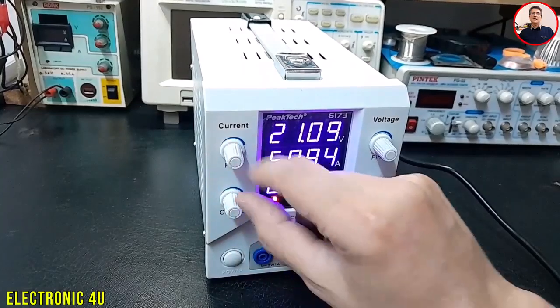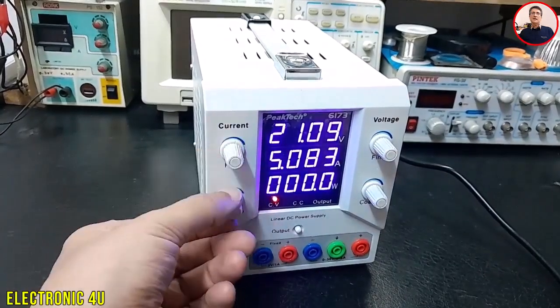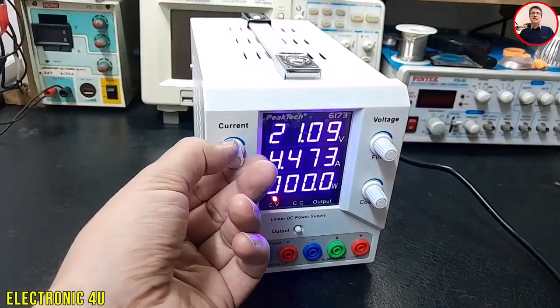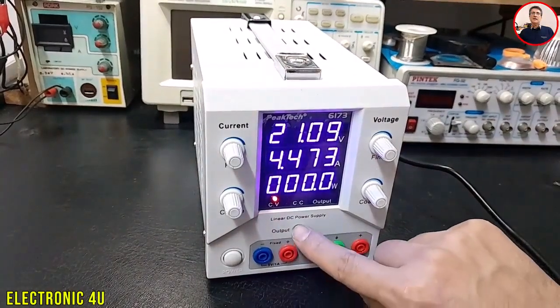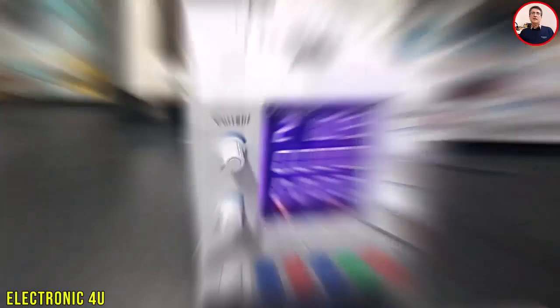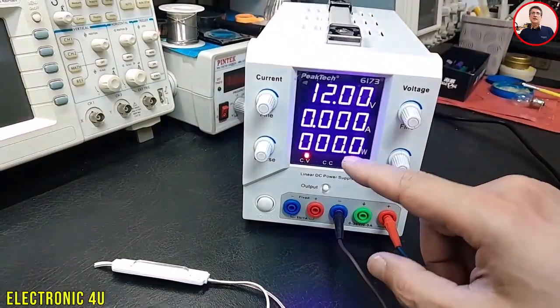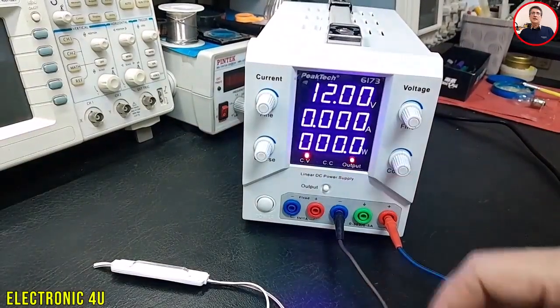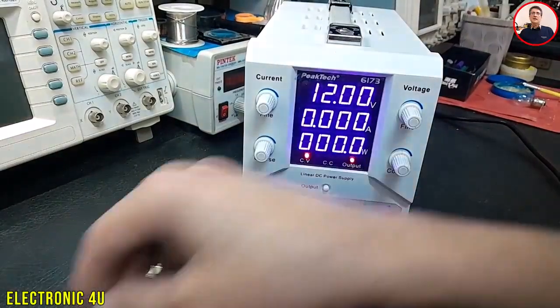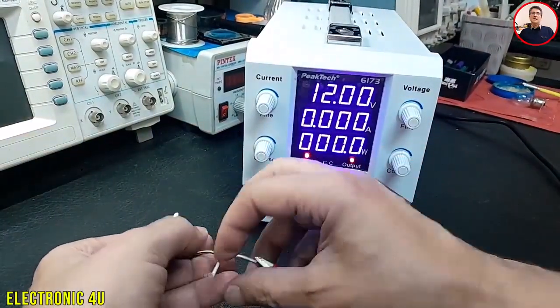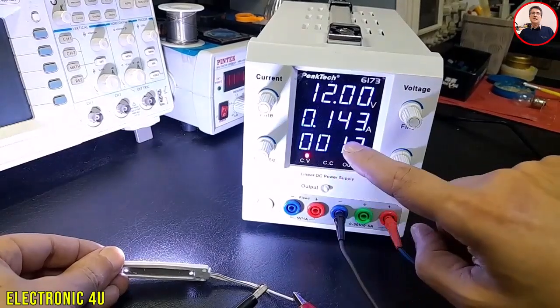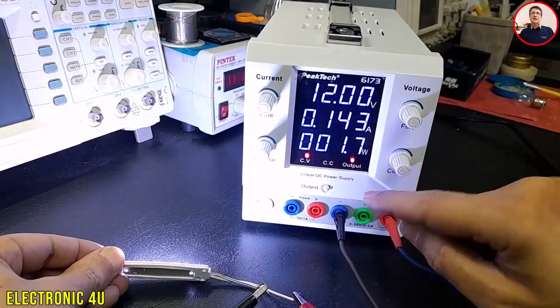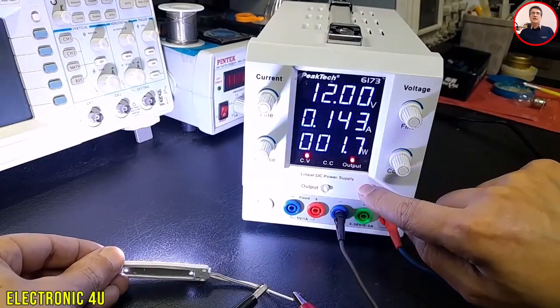The numbers on the screen are clear. To turn on the output, press the output button. This makes the voltage appear on the output. In this mode, the current is not shown until we connect a load to the output, like this LED. Now the current being used is shown. When the output is on, its light also turns on on the display.